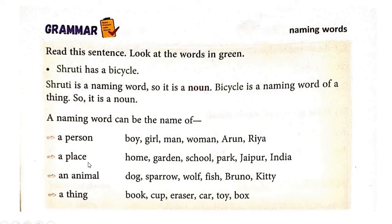A naming word can be the name of a person, a place, an animal, or a thing. A place: home, garden, school, park, Jaipur, India — these all are names of places, so these all are naming words.